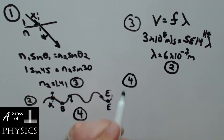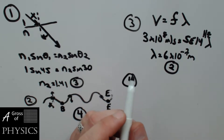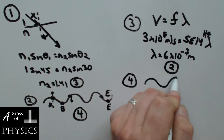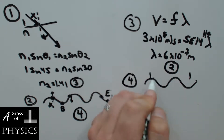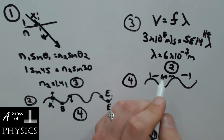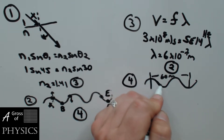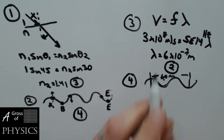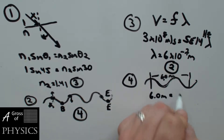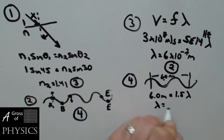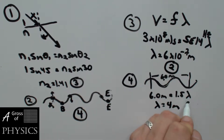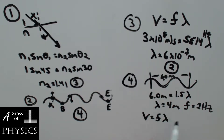For number four, we have another wave, and it's given us the distance between sections. It looks like it's going from the crest to the trough, so that's one and a half wavelengths, and I wrote 6.0 meters. So 6.0 meters is 1.5 wavelengths, meaning 6 divided by 1.5 gives a wavelength of 4 meters. The frequency is 2 hertz, and we need to find speed: V equals F lambda, so 2 times 4 is 8 meters per second. Choice three.